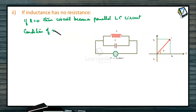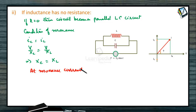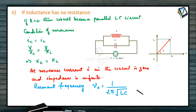At resonance, capacitive reactance equals inductive reactance. The current I in the circuit is equal to zero and the impedance is infinite. The resonant frequency is U-zero equals 1 by (2·pi·root(LC)). So at resonance the current is zero and impedance is infinite, with resonant frequency 1 by (2·pi·root(LC)).